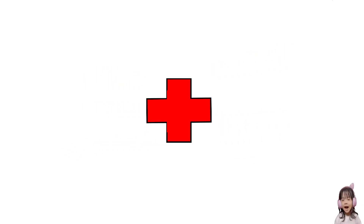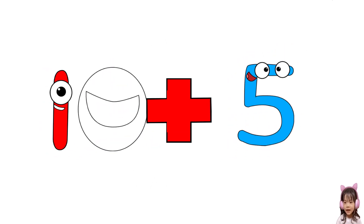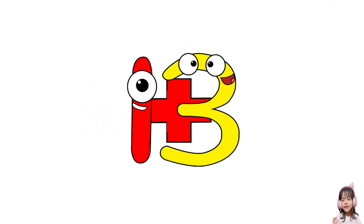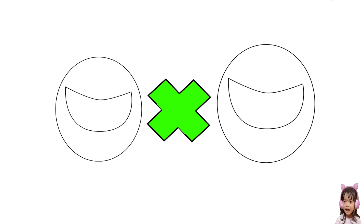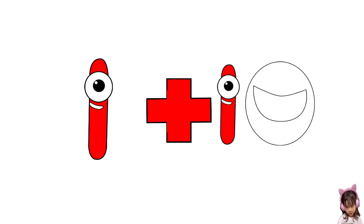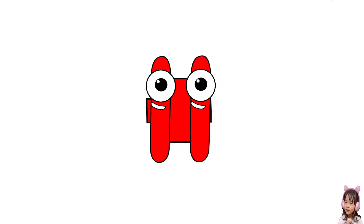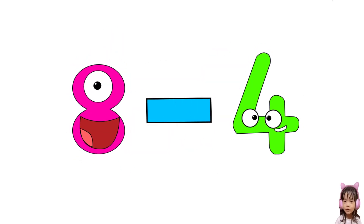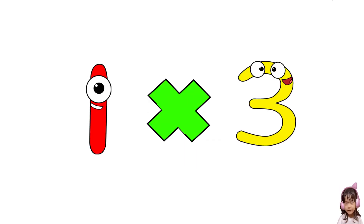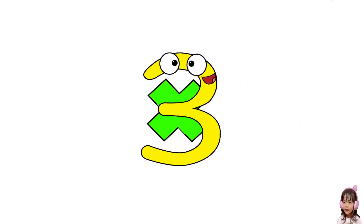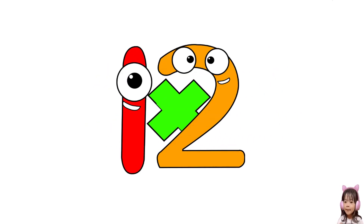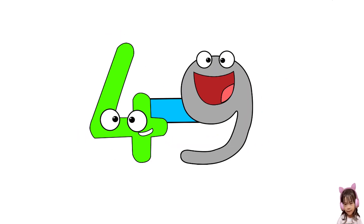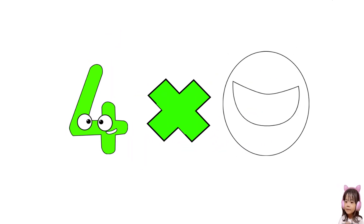Minus ten equals forty-one. Eight minus four equals four. One times three equals three. Four times three equals twelve. Zero minus two equals four. Times zero equals zero.